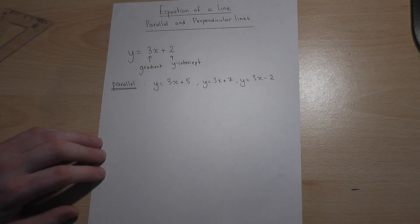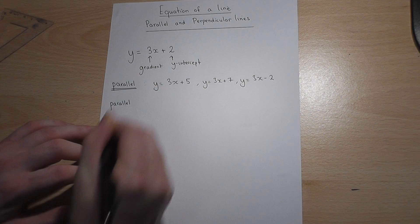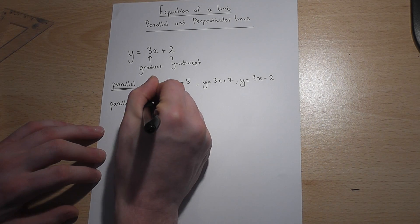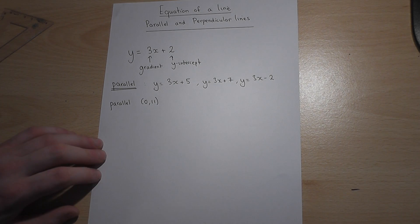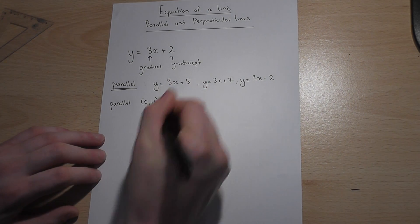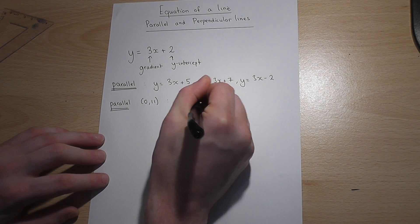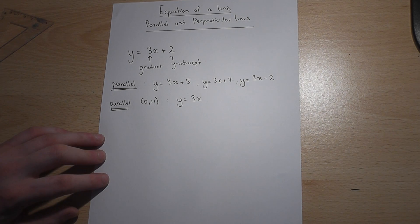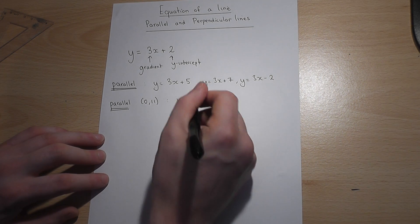They could extend it and ask for one which is parallel which passes through the coordinate 0, 11, and this is just asking for the special one which is of the form y equals 3x to make it parallel but with a y-intercept of 11.